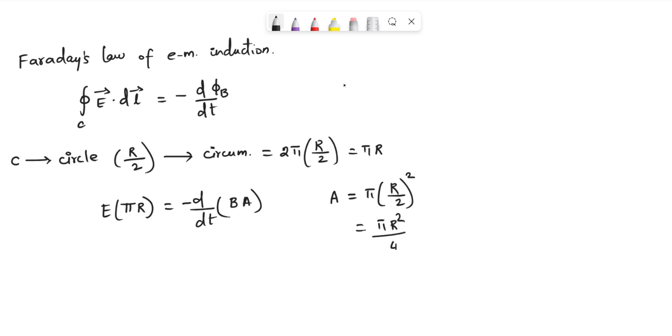Since the area is independent of time, this equation can be written as E times pi r is equal to minus A dB over dt. And hence, the rate of change of the magnetic field dB over dt can be written as E times pi r over minus A.